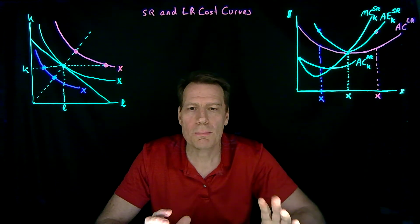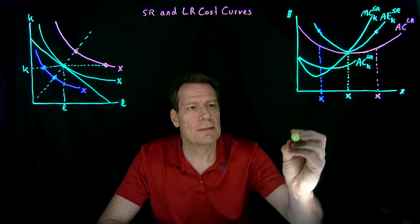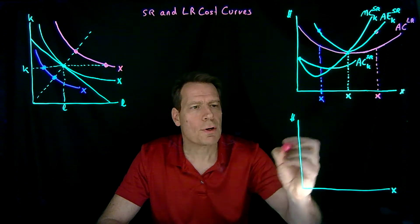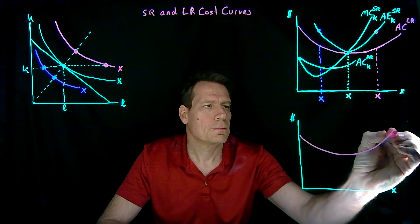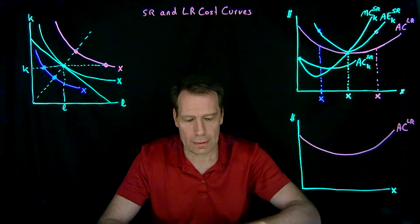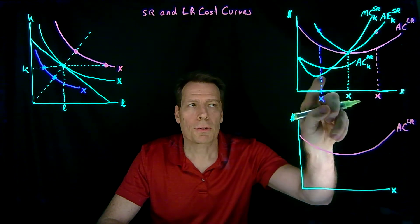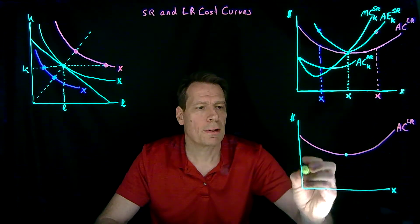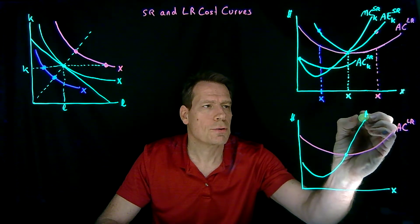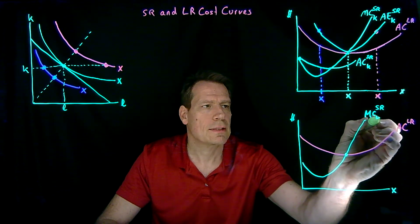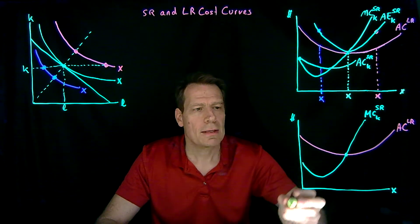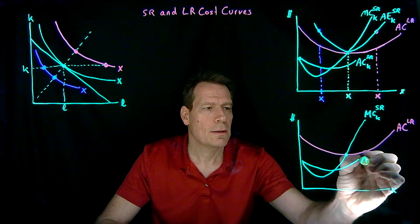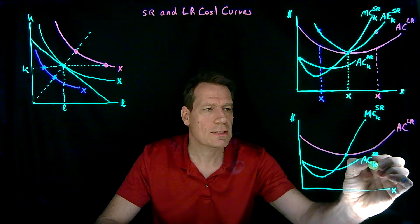Now there are a lot of curves in this picture — way too many to keep track of — so let's simplify. We'll start with the long-run average cost curve, then include the short-run marginal cost curve that goes through that lowest point when the firm is fixed to this level of capital. Then we'll include the short-run average cost curve that crosses the short-run marginal cost curve at the lowest point. So that's the short-run average cost given we're fixed at this level of capital.